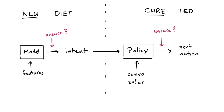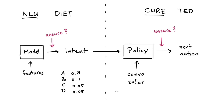Both DIET and TED give a confidence number when they make a prediction. Looking at DIET, we might have intents A, B, C, and D. A prediction could be something like: intent A with a confidence of 0.8, B at 0.1, C at 0.05, and D with a very small number. And the idea is that we could use these numbers to determine our confidence.